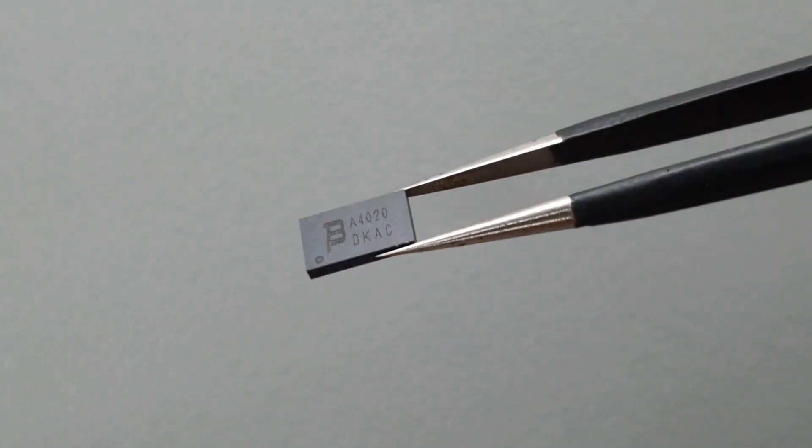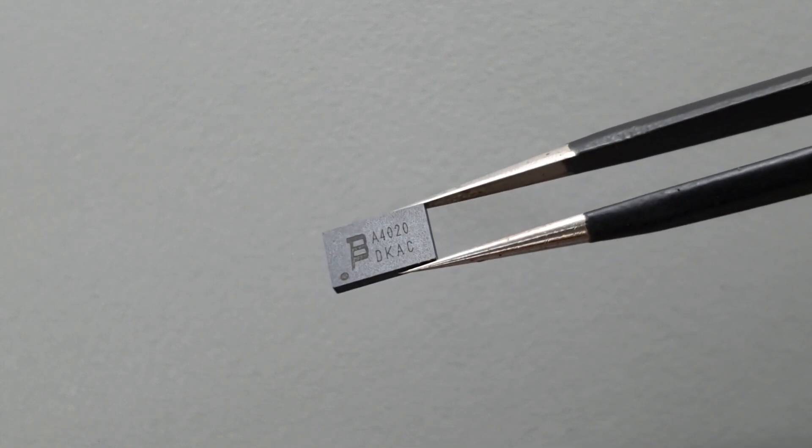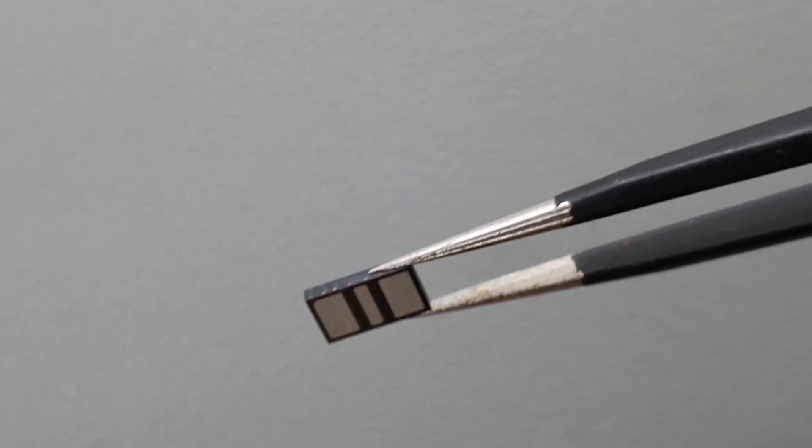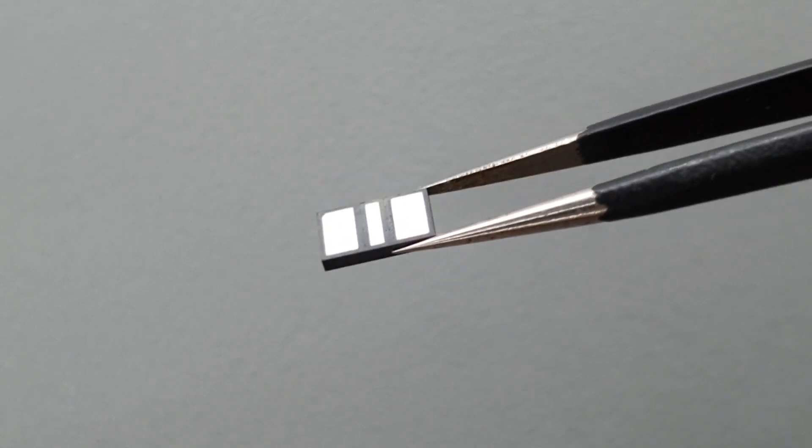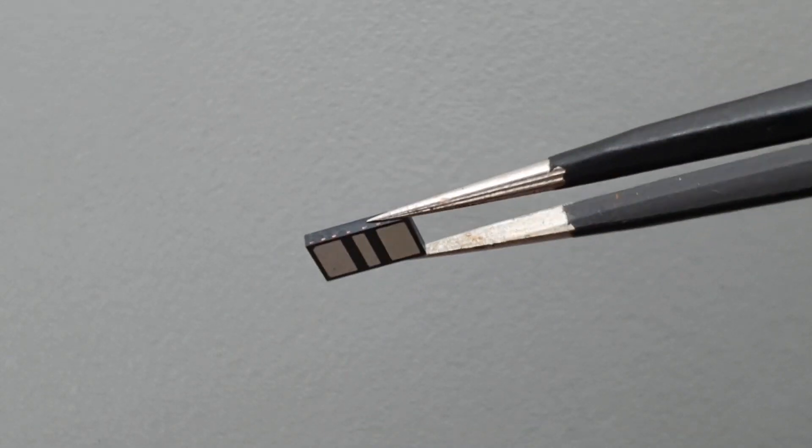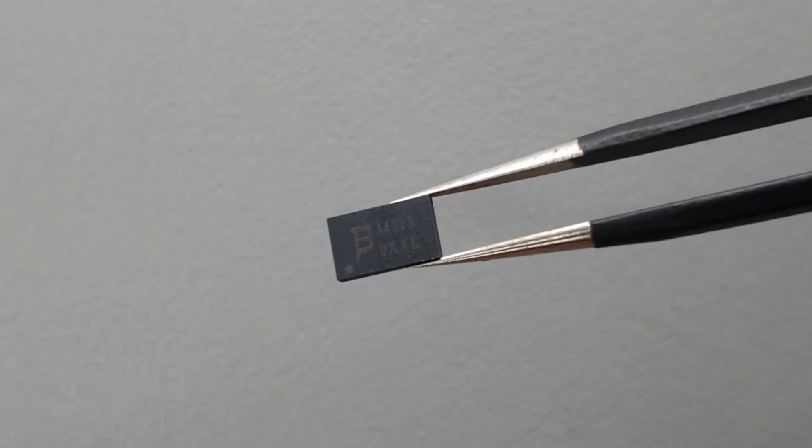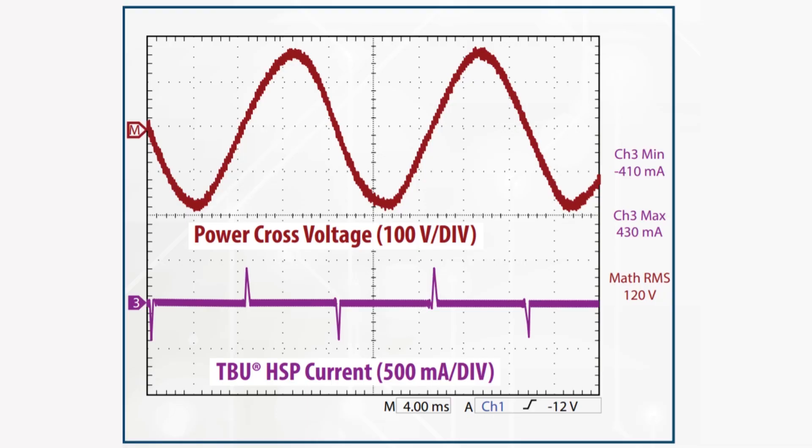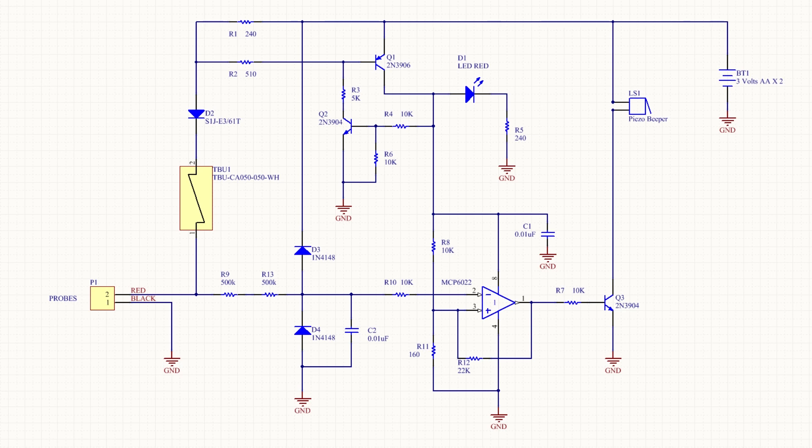Thankfully there really is such a thing. Bourns makes this part called a TBU or transient blocking unit for short. It's kind of like an electronic circuit breaker made out of two back-to-back depletion mode MOSFETs that act as a circuit breaker. When the current flowing through this normally low resistance device gets to a certain value it snaps into a high impedance state and cuts the current. This happens in about a microsecond. These things are normally used for protecting data lines in lightning environments and stuff like that. Perfect for protecting our continuity tester. By placing this thing in series with D2 we prevent the current from reaching any destructive level.